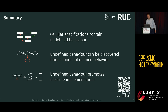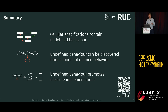To summarize: the cellular specification contains a lot of undefined behavior, which can be derived from a model of the defined behavior. We found many bugs caused by this undefined behavior, suggesting it promotes insecure implementations. The paper, artifacts, and a hands-on tutorial are available via the QR code. With that, I'd like to end my talk and would be open for questions.